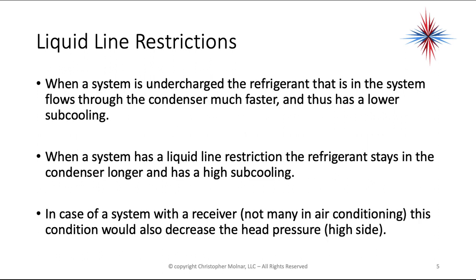When a system is undercharged, the refrigerant flows through the condenser much faster and has lower sub-cooling. When a system has a liquid line restriction, the refrigerant stays in the condenser longer and has high sub-cooling. In the case of a system with a receiver — and there are not many of these in air conditioning — this condition would also decrease the head pressure, which is the high side pressure.